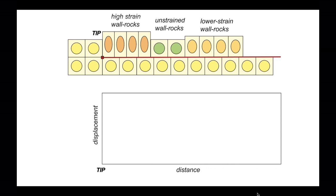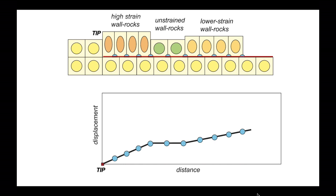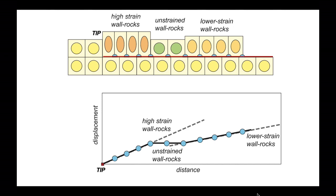Let's plot these relationships on the displacement distance diagram. Joining the markers up shows it's not a straight line. Breaking this line into segments with distinct gradients: the high strain wall rocks plot on a steep gradient, the lower strain wall rocks on a more gentle gradient, and the unstrained wall rocks plot on a flat line showing constant displacement. The shape of the plot — these variations in gradient — reveal rheological variations: the different abilities of wall rocks to accumulate strain. This is mechanical stratigraphy.